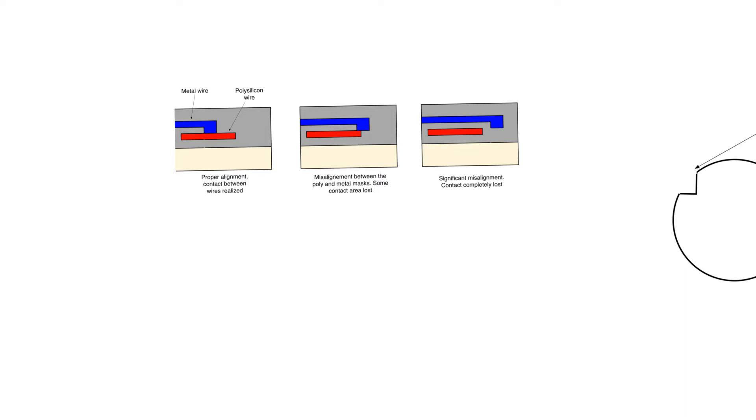What we mean by misalignment is when we expose the wafer to the mask of a certain layer and then expose to the mask of a second layer, there's a slight misalignment between the two masks so that there's a relative offset between the mask and the wafer in one layer relative to the other.